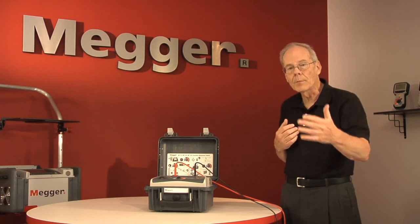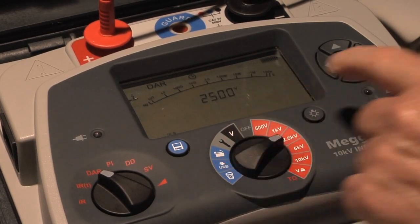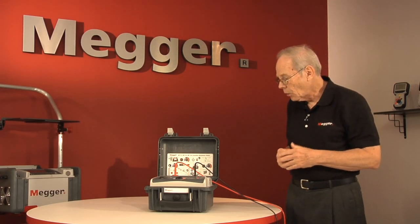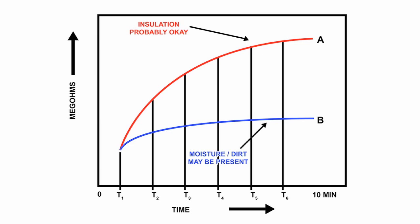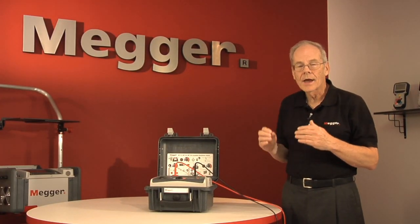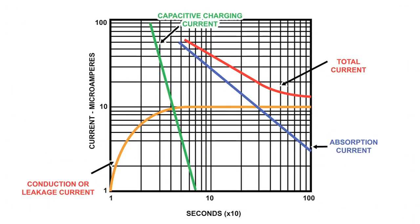The tester will automatically run the test for that time. At the end of the test, all the data is shown on the display — it will show you time one, time two, and it will calculate the ratio for you. The goal is to look for a relatively high ratio, because insulation that has deteriorated will show relatively little charging effect but a lot of leakage effect.